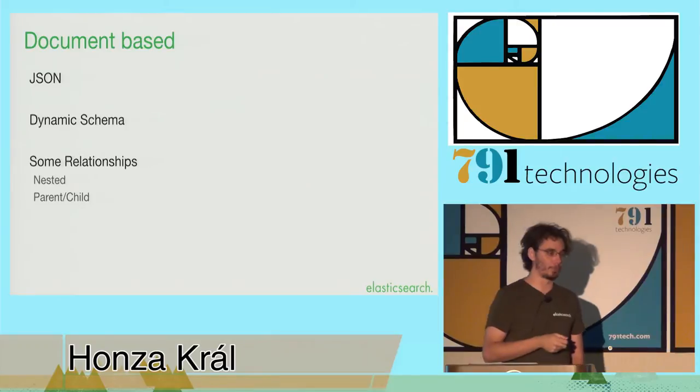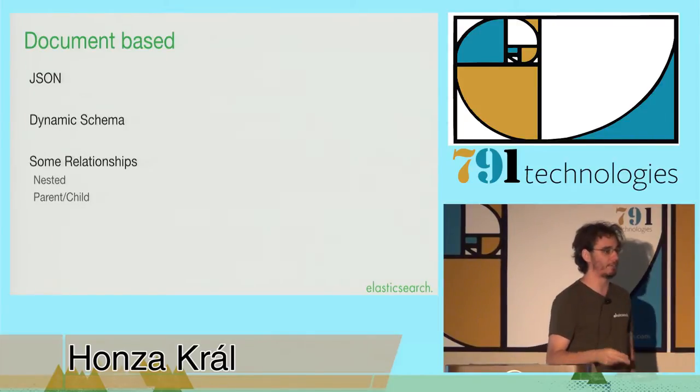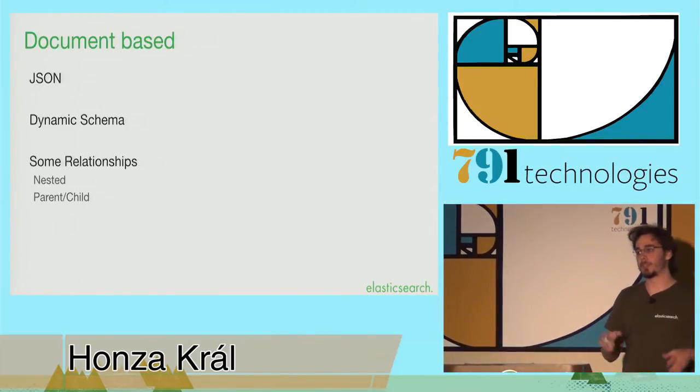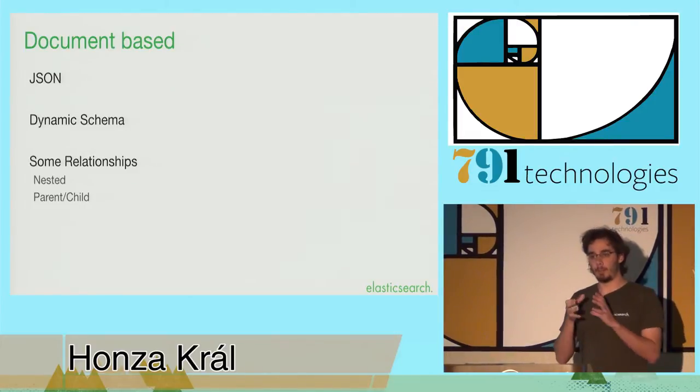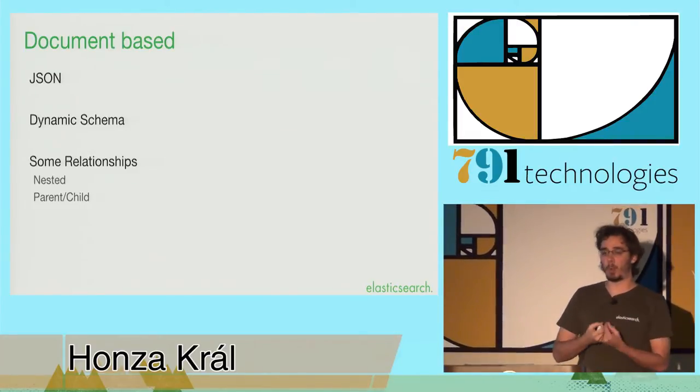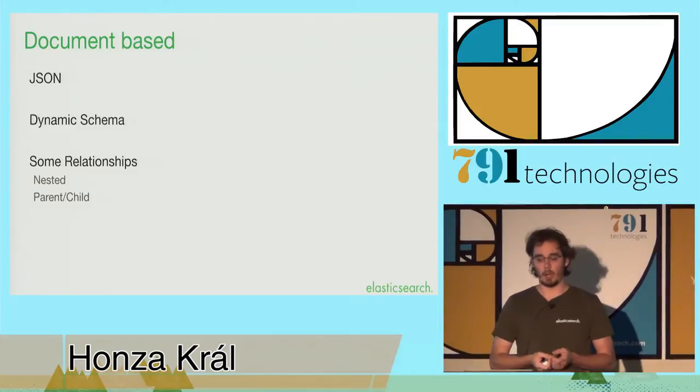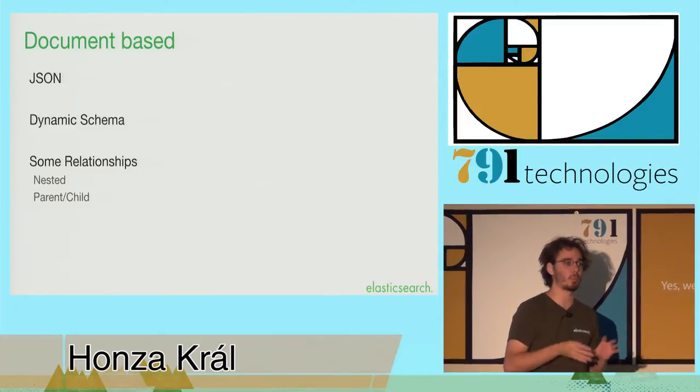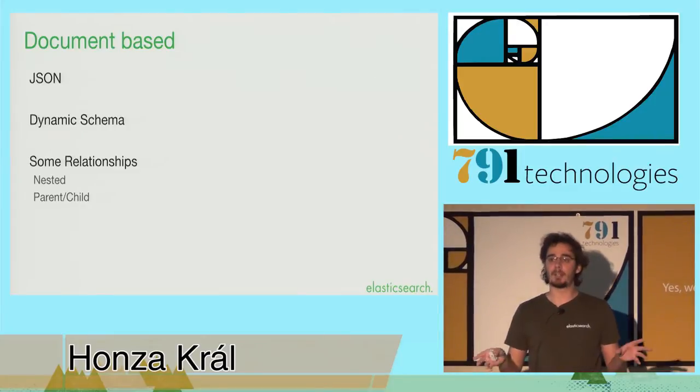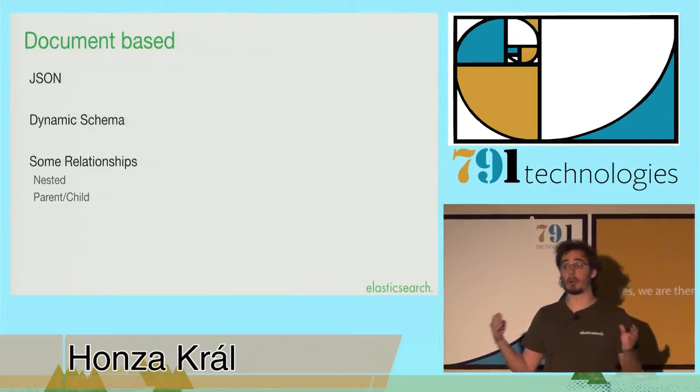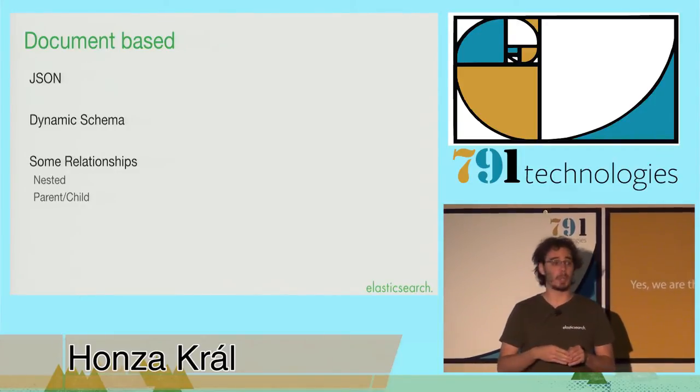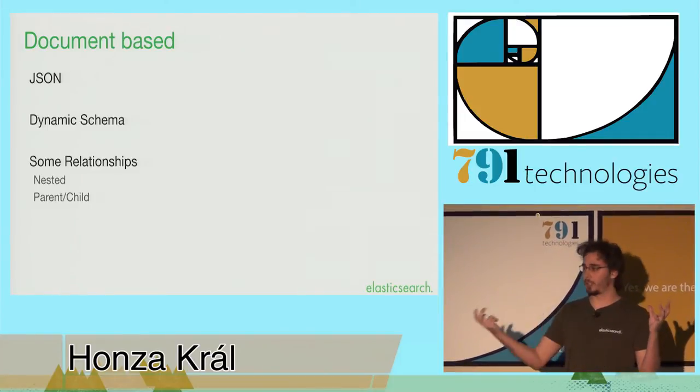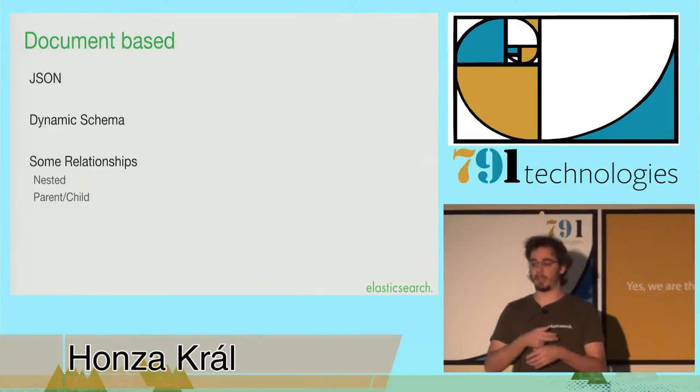We also have support for some relationships, so you can actually have nested documents, which is essentially a sub-document as part of a bigger document that can be queried independently. We'll see an example in just a bit, and we also have parent-child, which is essentially a one-to-many relationship that you can use to query across. So you can query the parents while asking conditions on the children and vice versa.